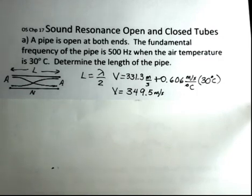So first for Part A, we're told the fundamental frequency of the pipe is 500 hertz when the air temperature is 30 degrees Celsius. We want to know the length of the pipe.